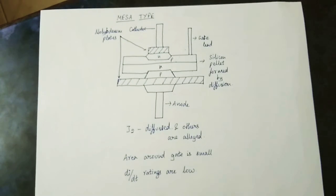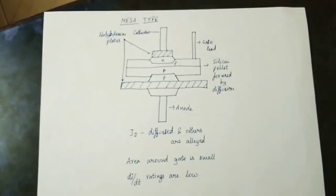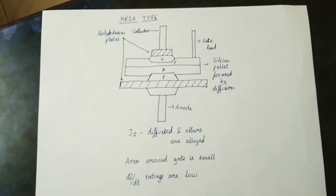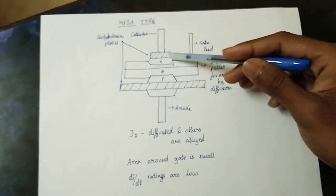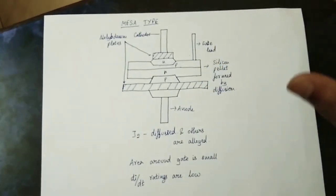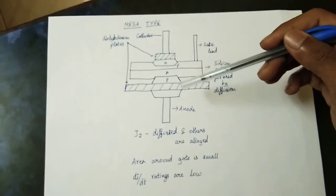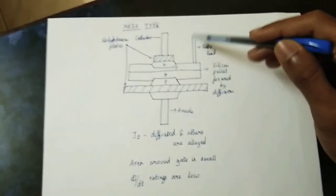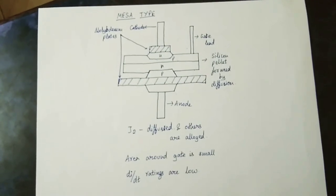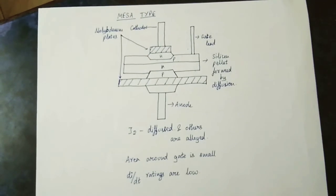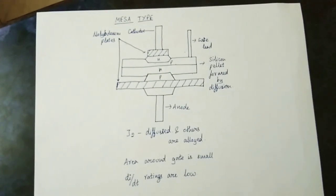The second type is Mesa Type. The Mesa Type is diffused in the center of the J2 layer, whereas the outer layer is alloyed. Alloying is made of metal materials. The J2 layer is diffused in the center, and the anode and cathode carry the current through the J2 layer. The area is small.